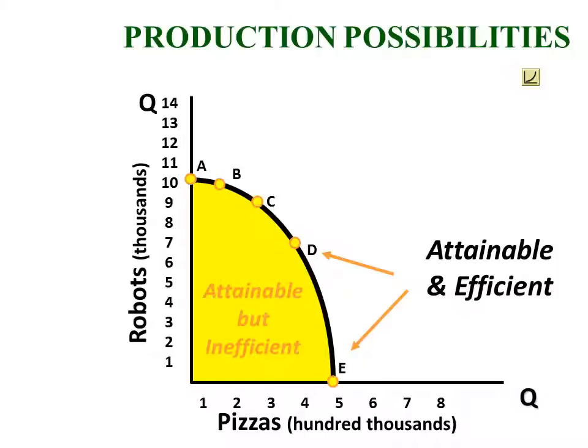Typically, the resource that's unemployed or underemployed is labor — men and women standing on the sidelines who are willing and able to work but simply cannot find a job at present. So we would be doing better. If we recovered from a recession, it would be a movement from inside the curve back towards the curve.